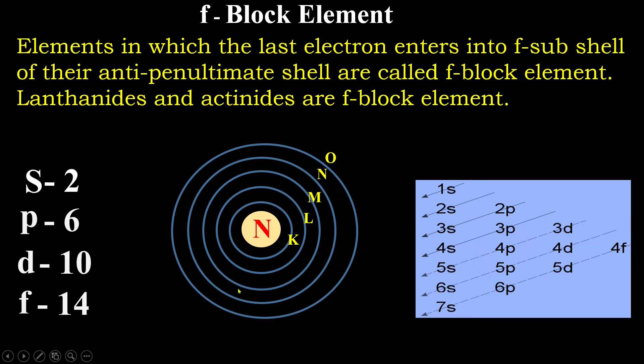If last electron enters into F sub-shell of anti-penultimate shell. Anti-penultimate shell means what? In this case, in this figure, there are five shells are shown. The outermost shell is O. N is penultimate shell. And M is anti-penultimate shell. While filling the electrons, if last electron enters into an M-shell. And F sub-shell. Then this is called F-block element.